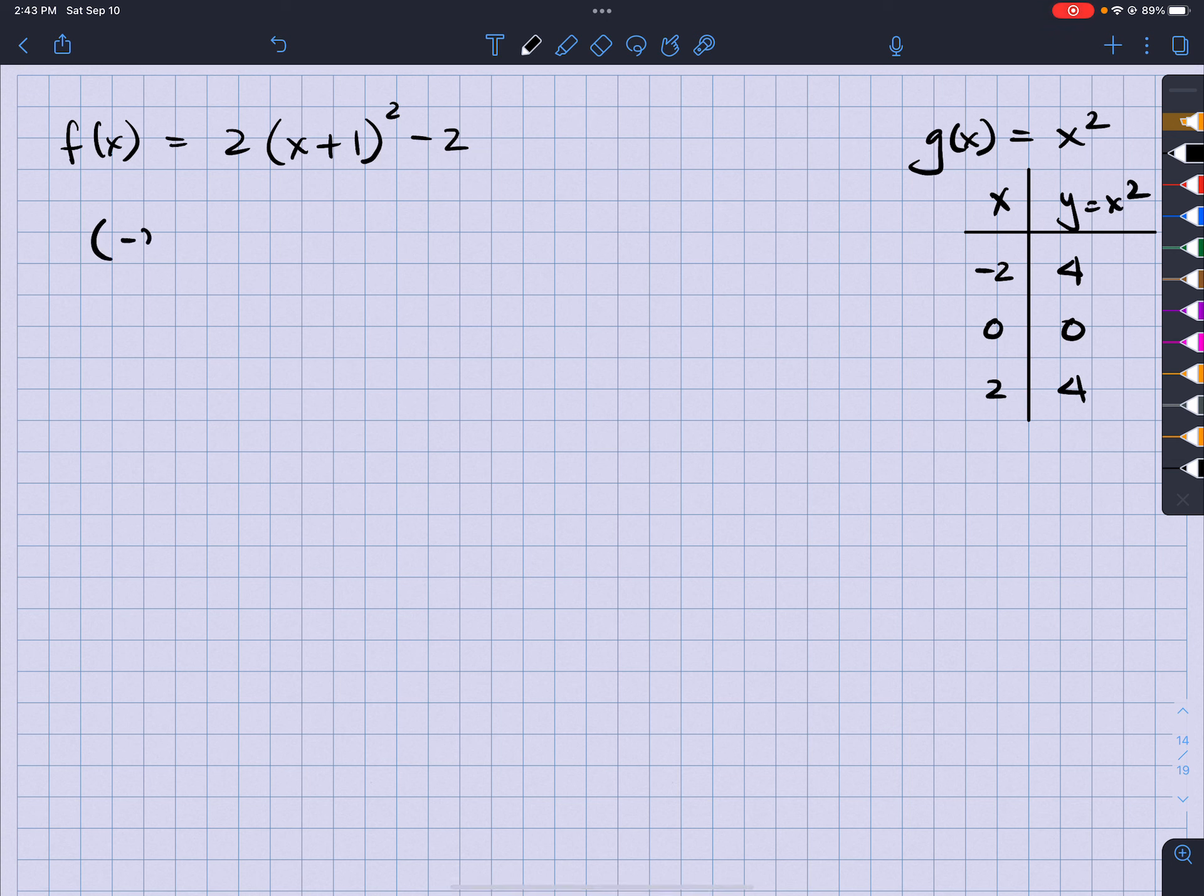So I have three points. Negative 2, 4, 0, 0, and 2, 4. Alright?